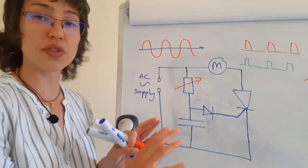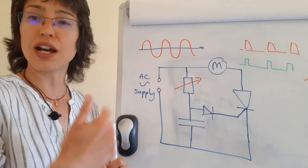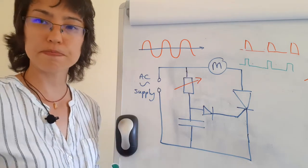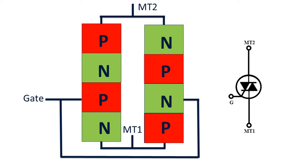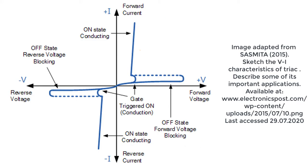A triac is essentially two thyristors that are back-to-back. So in both directions — in forward bias and reverse bias — it actually has the same characteristics as a thyristor did in forward bias. So if you know what the IV characteristics look like for a thyristor, then it's easy to extrapolate and understand what the IV characteristics of a triac would look like, as you can see here.